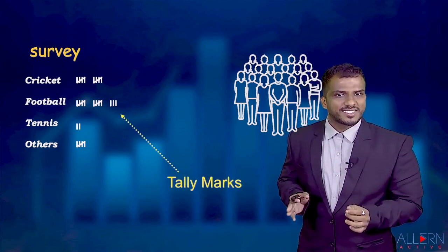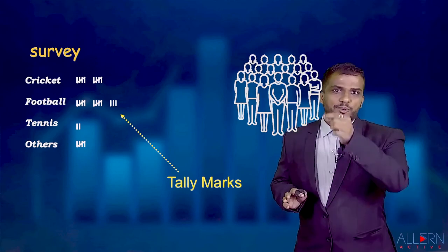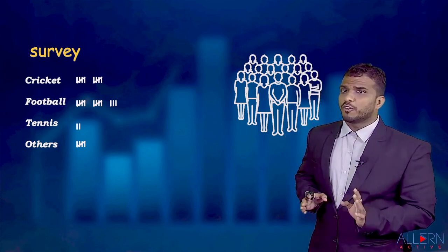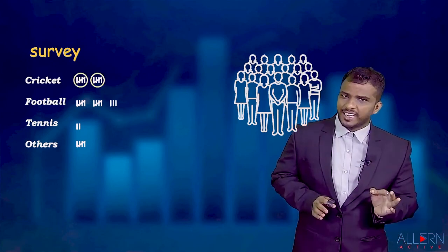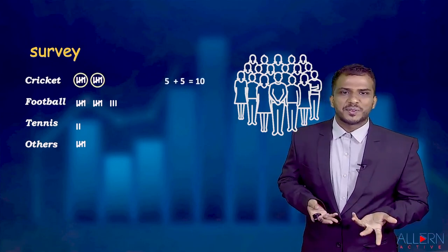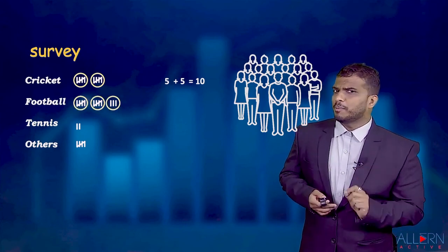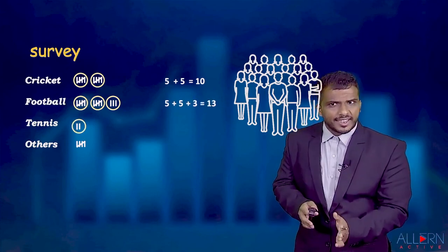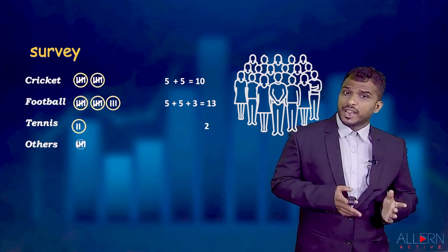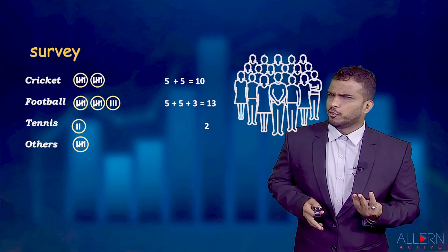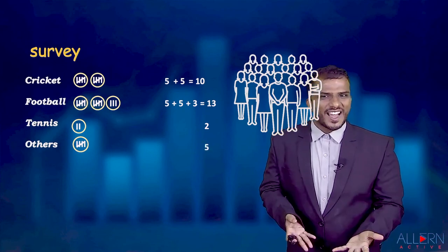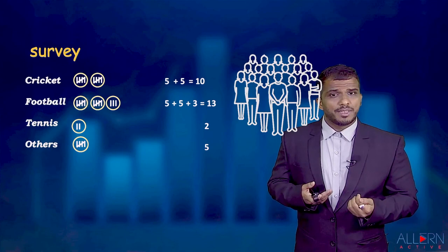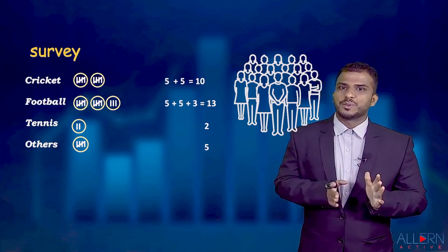This method of representation — writing vertical bars and putting a cross for the fifth — is called tally marks. Now we can read the final data easily. Cricket has five plus five, which is ten. Football has five plus five plus three, which is thirteen. Tennis has two, and others has five. Adding them all: ten plus thirteen plus two plus five equals thirty — that many people participated in the survey.